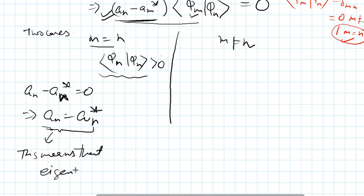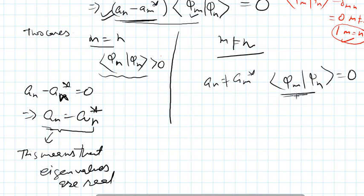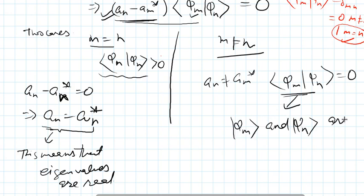In the second case, when m is not equal to n, a_n is not equal to a_m*, so the inner product phi_m phi_n must equal zero. This means their scalar product is zero, which is possible if and only if phi_m and phi_n are orthogonal.